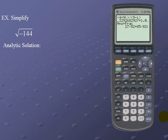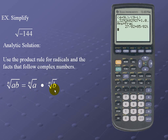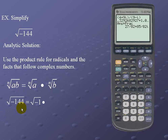Let's simplify the square root of negative 144. Here's the analytic solution. We will use the product rule for radicals and the facts that follow complex numbers. The product rule states that the nth root of (a × b) equals the nth root of a times the nth root of b. Applying that to √(-144): that's √(-1) times √(144), and using our facts from complex numbers, our result is 12i.